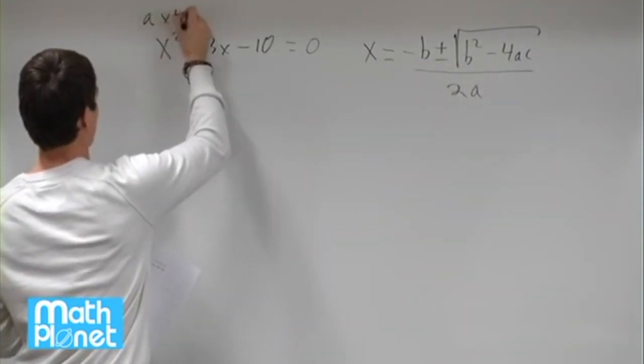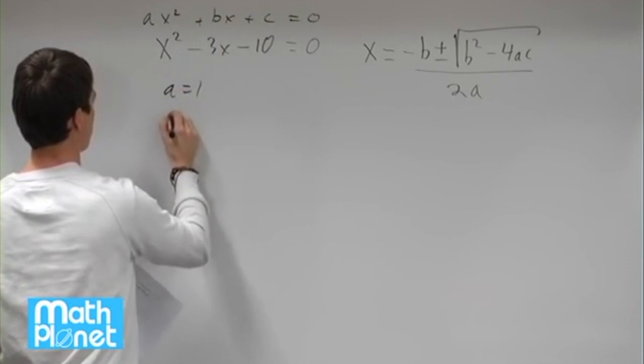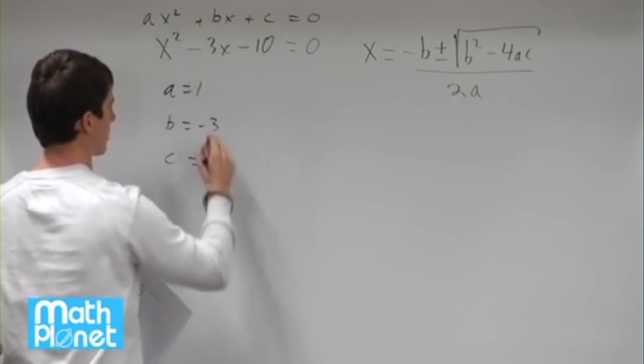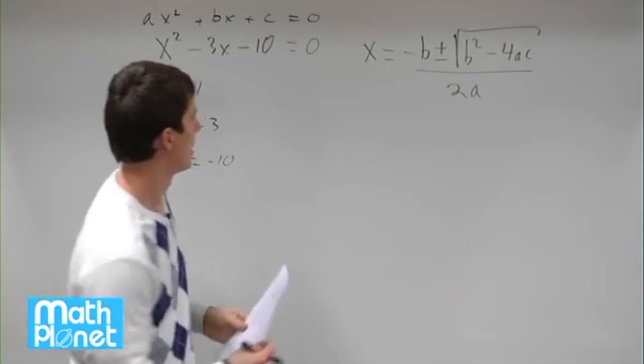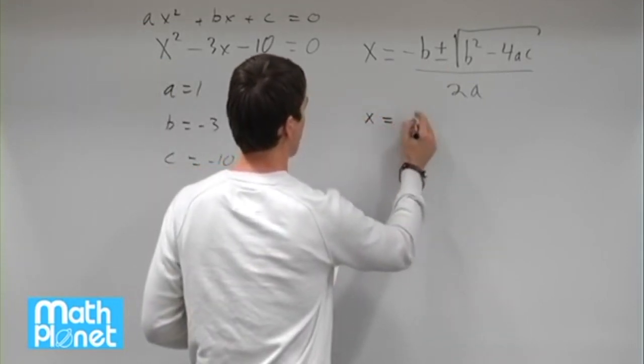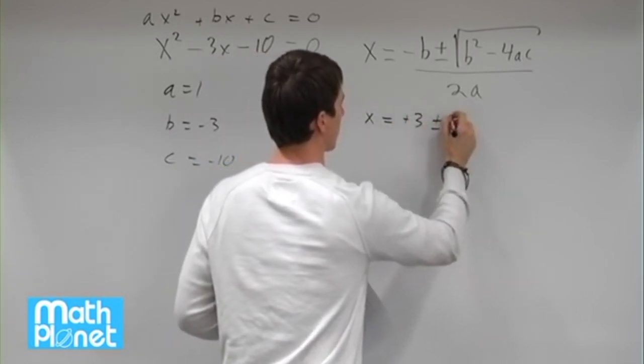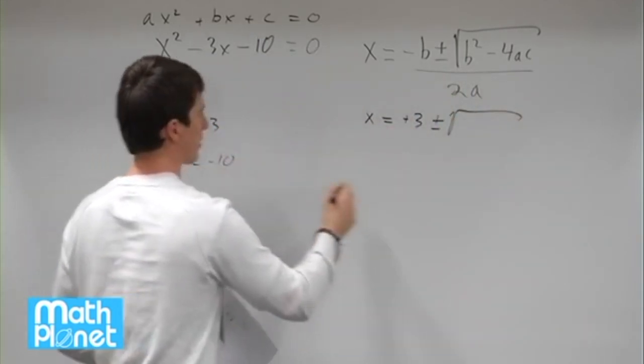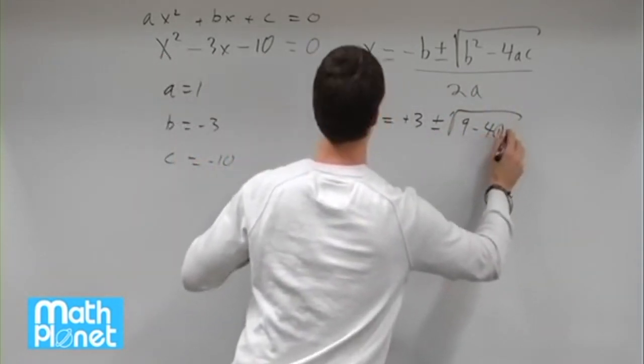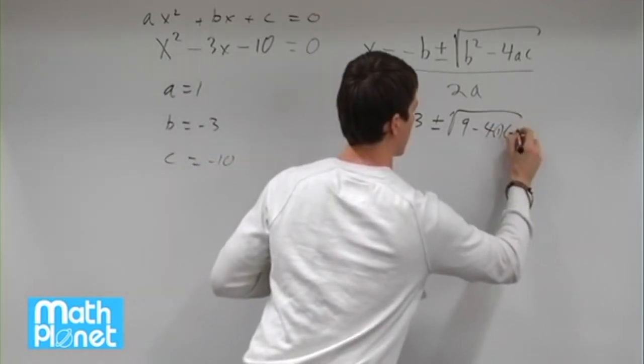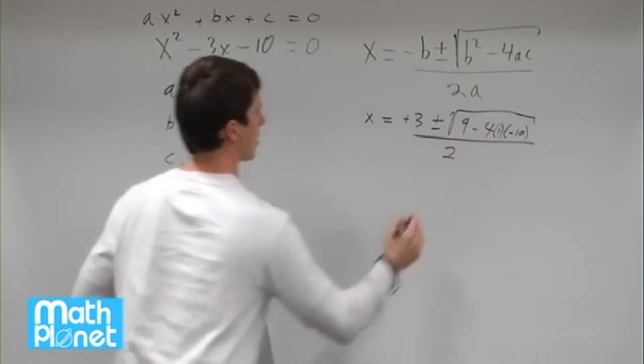We have ax² + bx + c equals 0. So a is equal to 1, b is equal to negative 3, and c is equal to negative 10. We want to plug these three values in here, and we're going to get two answers because of this plus or minus and the square root. Negative b, b is negative 3, so negative is negative and positive 3 plus or minus the square root of b². Negative 3 times negative 3 is 9, minus 4a which is 1, and c which is negative 10. Don't forget you're all over 2 times a which is just 1.